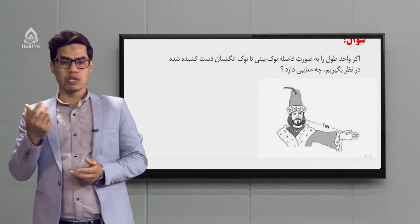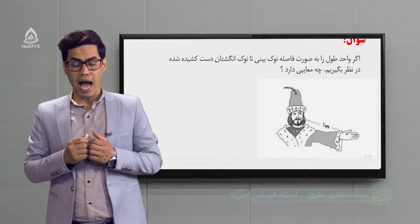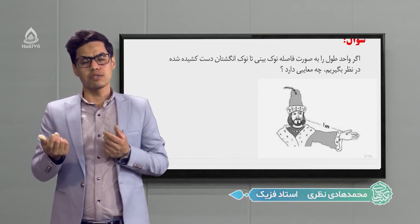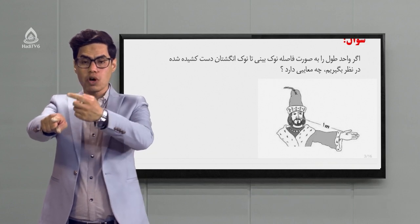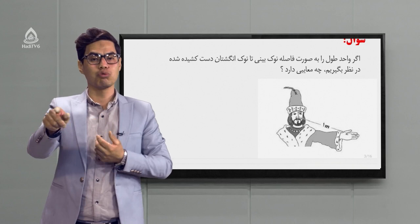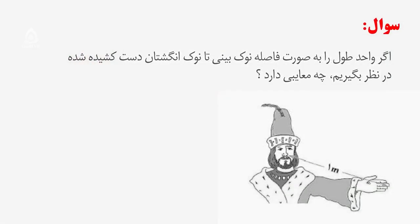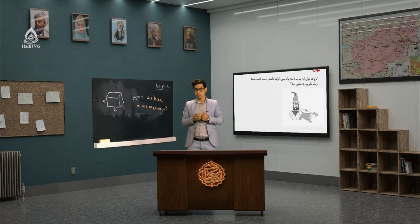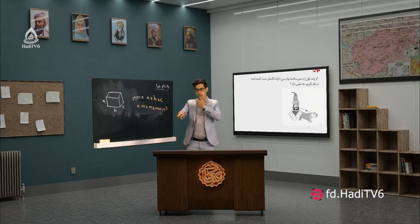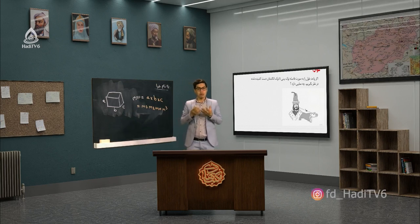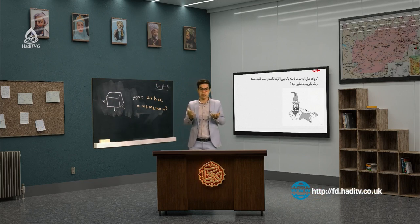درس خودمان را با یک سوال شروع می‌کنیم. اگر ما برای واحد طول، فاصله نوک بینی تا وقتی که دست خودمان را می‌کشیم - یعنی نوک بینی تا دست کشیده - را به عنوان واحد برای طول تعریف کنیم، آیا این واحد قابل قبول است یا نه؟ چه معایبی دارد؟ یکی از معایبش این است که برای هر شخص متفاوت است، و دوم به مرور زمان هم تغییر می‌کند. پس نمی‌تواند یک واحد خوبی باشد.